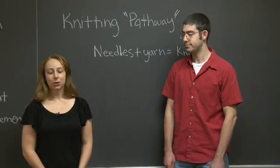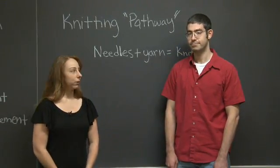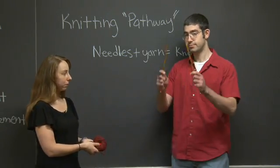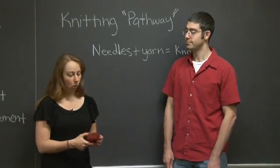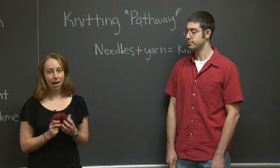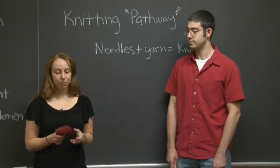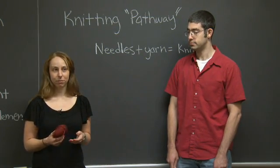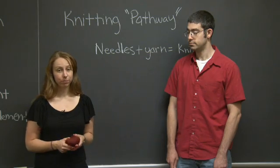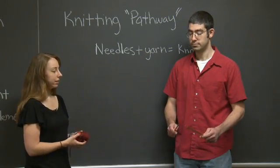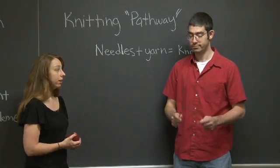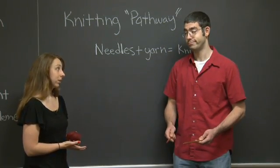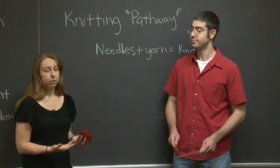All right. So in the first scenario, we're going to have me with yarn and Robert with needles. When I have yarn, I can't knit by myself because I am lacking needles. This is equivalent to having a mutation in what we'll call the gene for needles. Robert, on the other hand, has needles, but by himself, he has no yarn, so he can't knit. So alone, neither of us are able to knit.